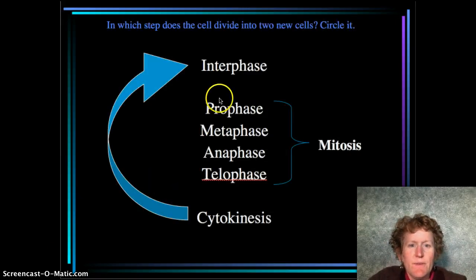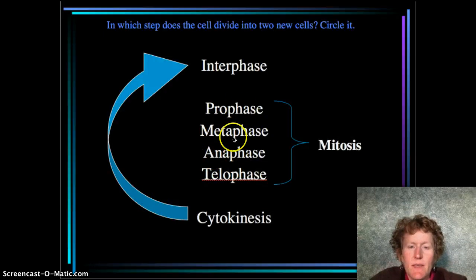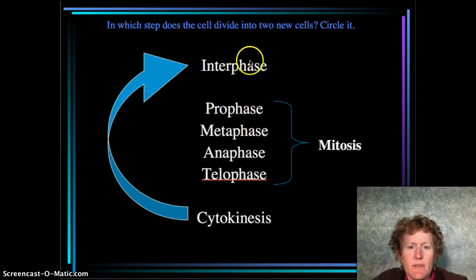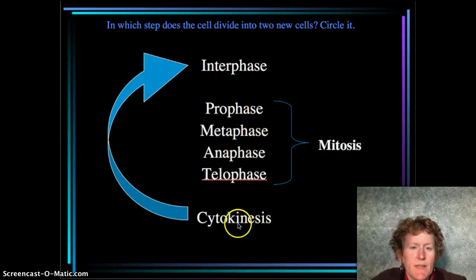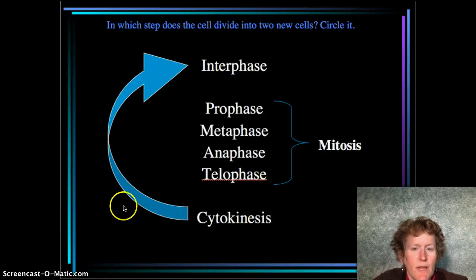Here's an overview: mitosis happens here. Remember, interphase is most of the cell cycle. The cell cycle goes through mitosis — those steps we talked about — then cytokinesis, and starts all over again. It's a cycle.